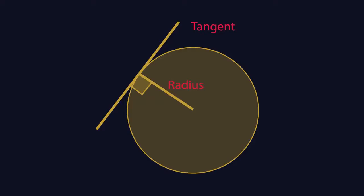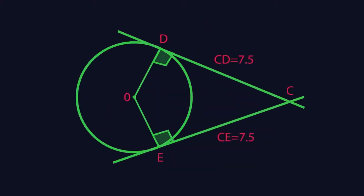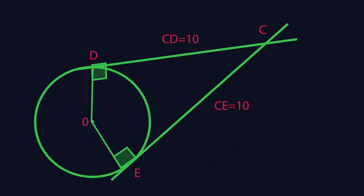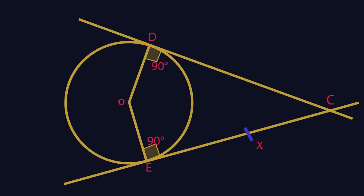What do you notice about the lengths of the tangents? The lengths of two tangents from a point to a circle are equal. This is useful to bear in mind as it means you have two identical triangles.